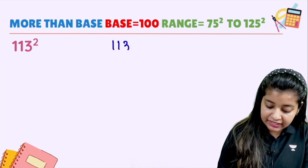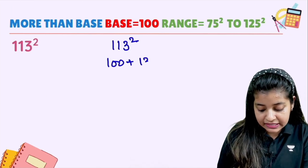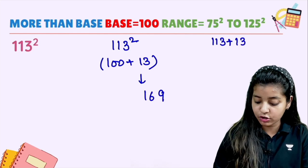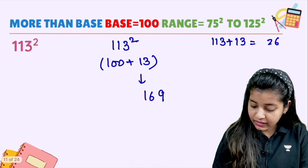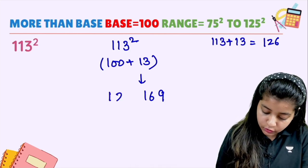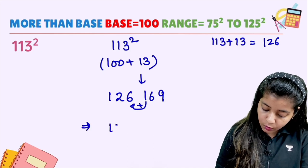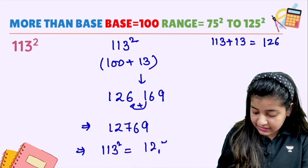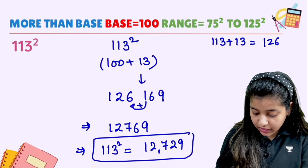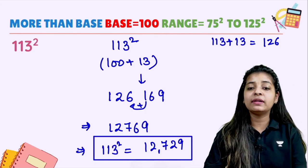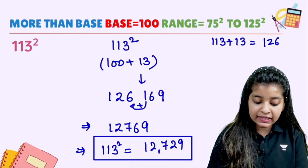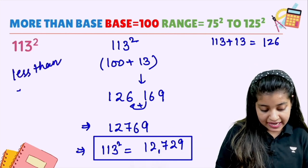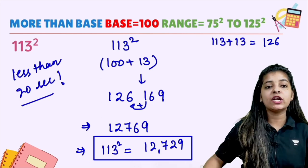Let's see 113 squared. We can break it as 100 plus 13. 13 squared is 169. Now 113 plus 13 gives 126. The 1 carry forwards — so 127, and 69 stays. So 113 squared is equal to 12769. Simple, straightforward — less than 20 seconds for our answer.